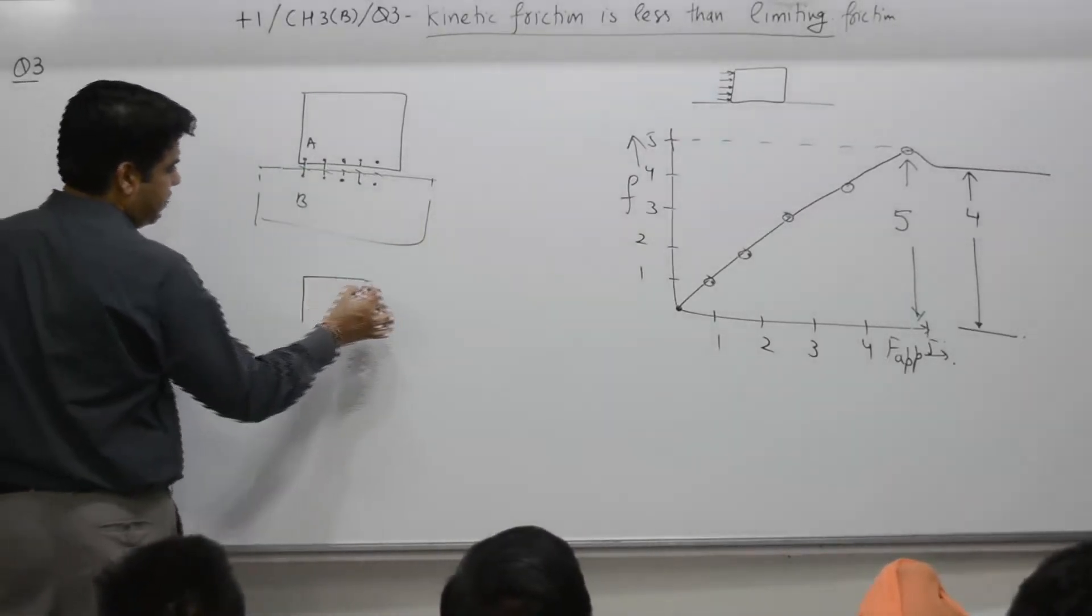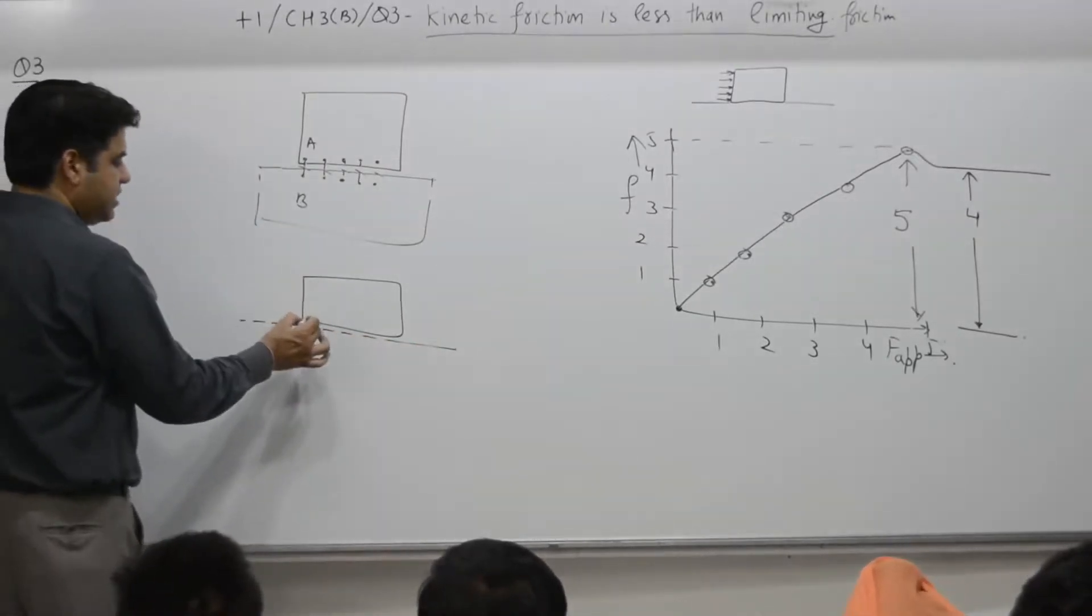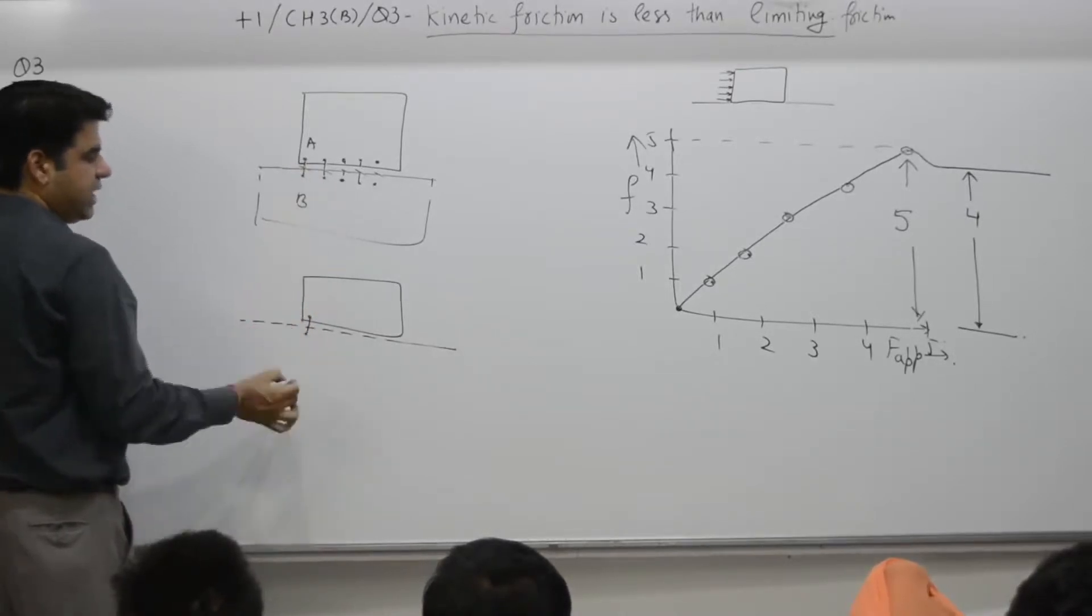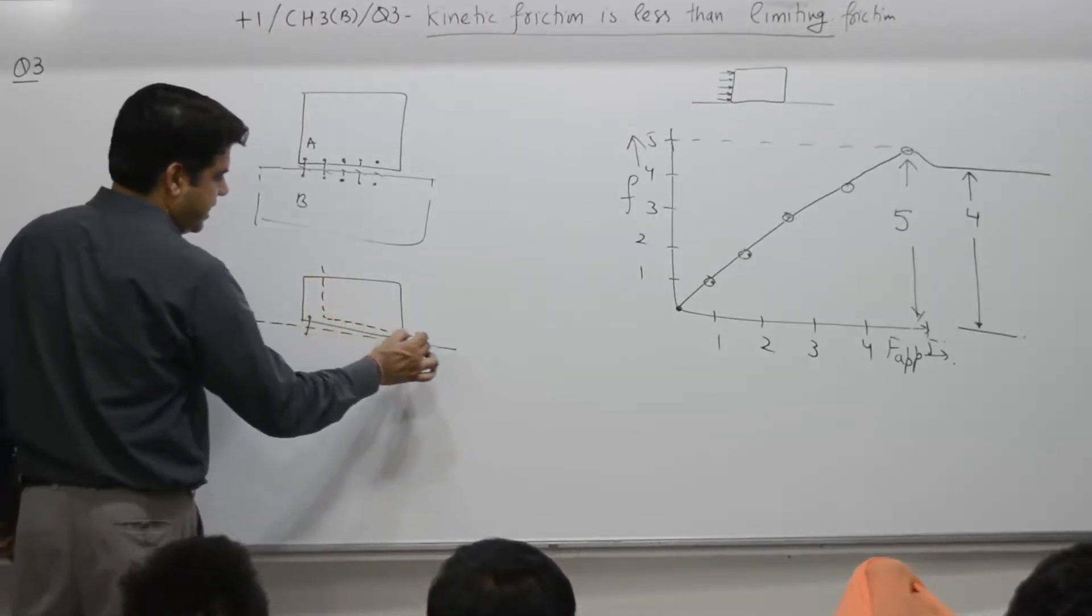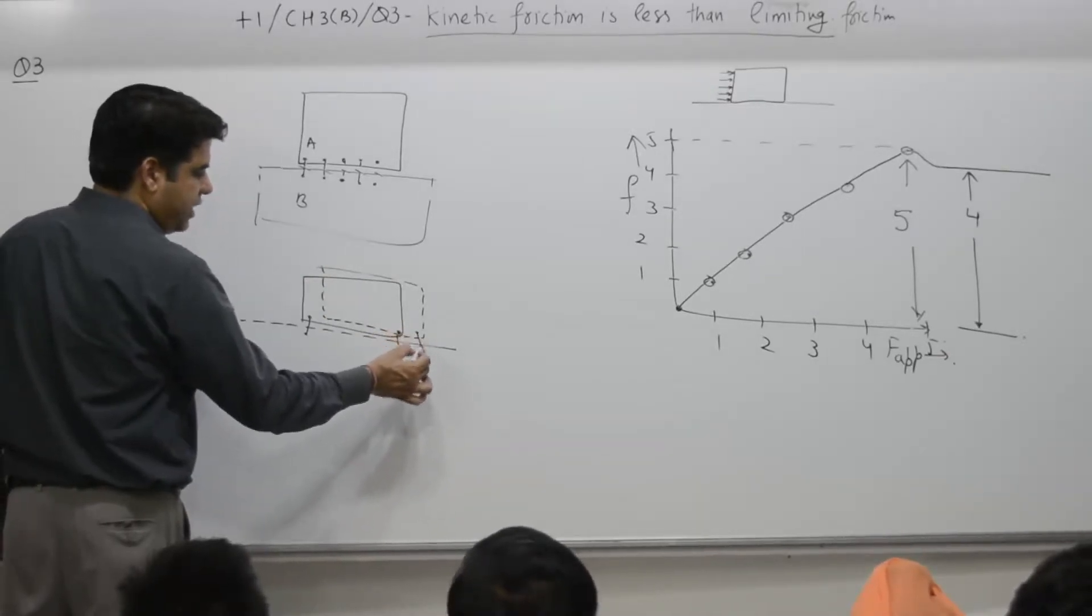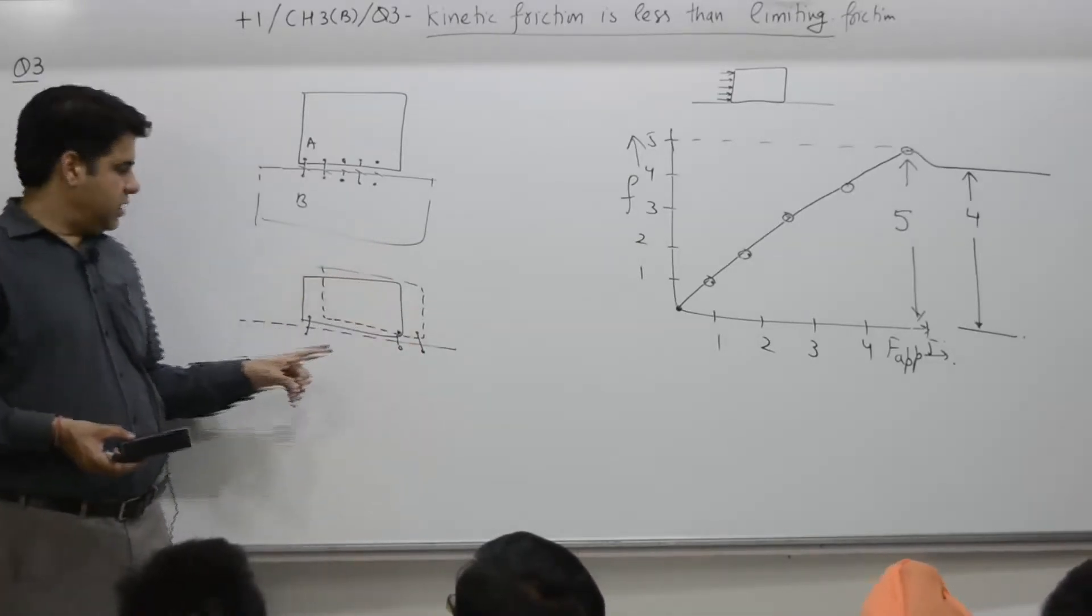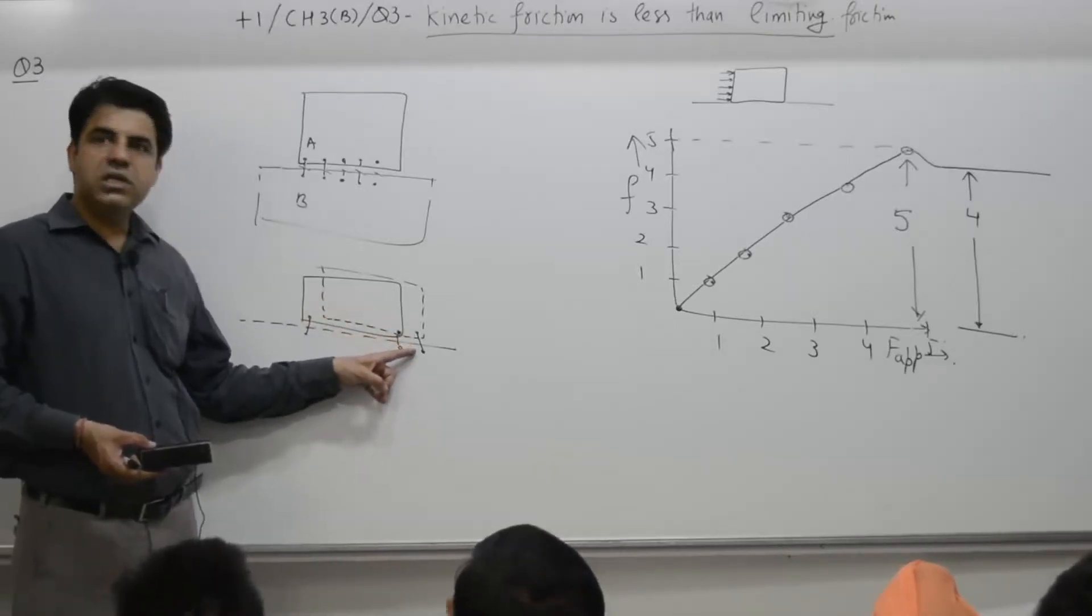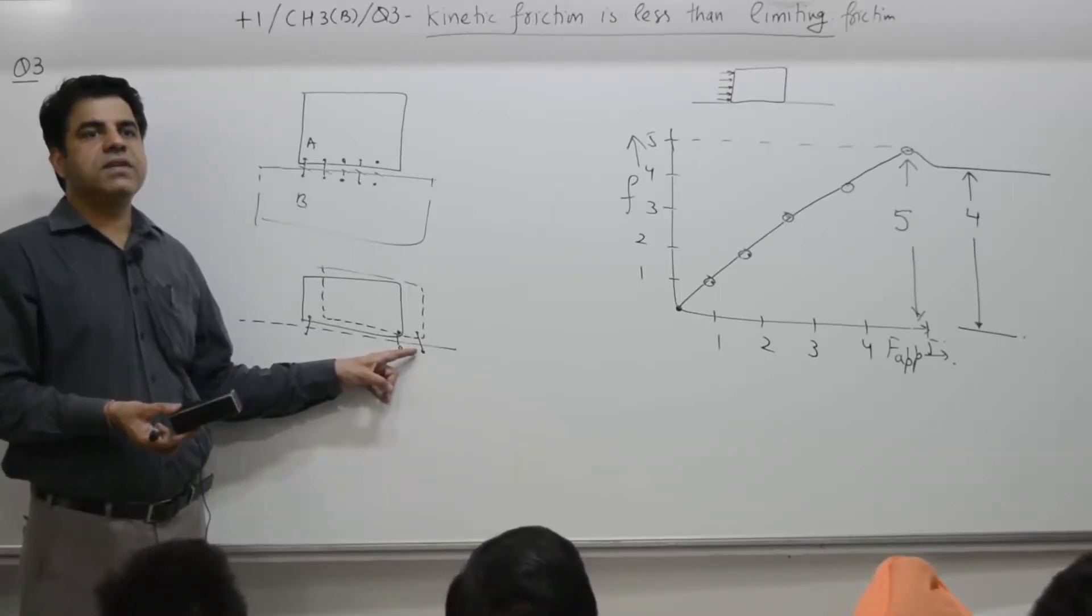Two, if the same object, once it is set in motion, initially it is in this position, so this bond between this atom and this atom will break and after some time the object is in this position. Break and now it is make. As the object moves forward, these bonds break and the new bonds make. Process is known as break and make. This process is very fast.